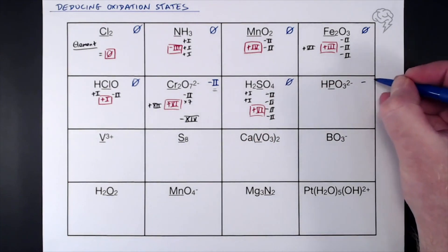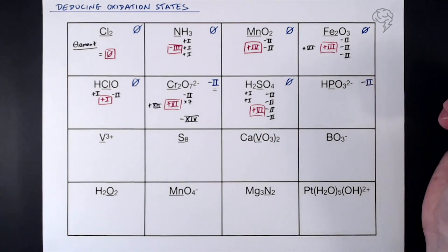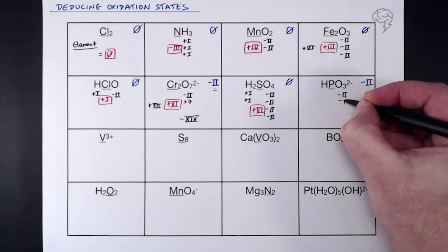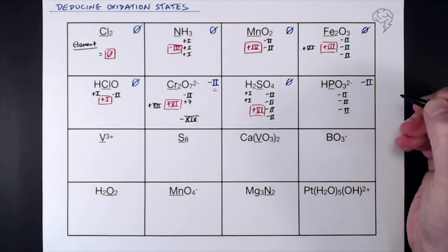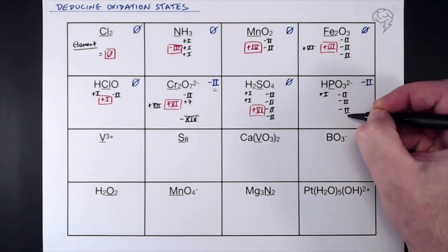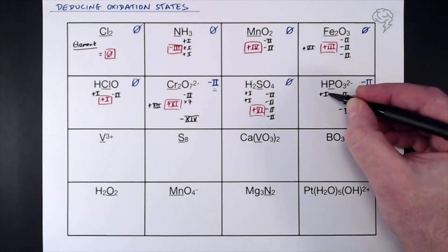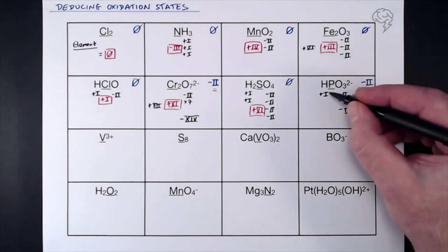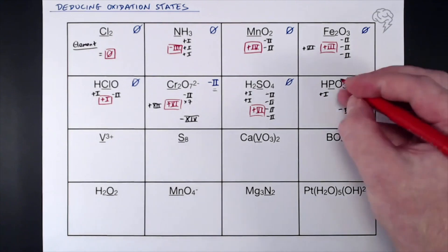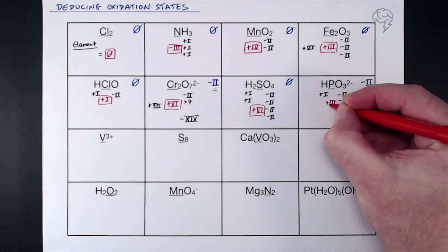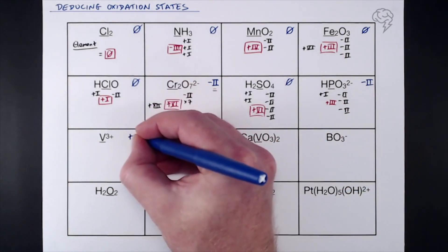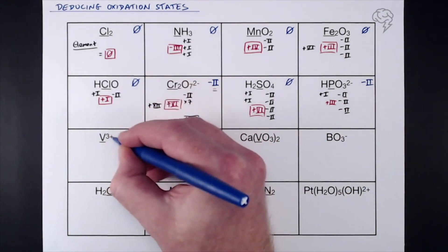HPO₃²⁻ — overall oxidation state is −2. We've got three lots of oxygen: 3 × (−2) = −6, plus +1 for hydrogen, giving −5. We need to get from −5 to −2, so the difference is +3. Therefore phosphorus is +3.